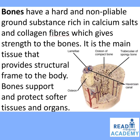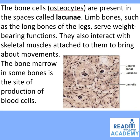Bones have a hard and non-pliable ground substance rich in calcium salts and collagen fibers, which gives strength to the bones. It is the main tissue providing structural framework of the body. Bones support and protect softer tissues and organs. The bone has an outer compact bone and an inner trabeculae of spongy bone. A central Haversian canal surrounded by lamellae forms the osteon, with bone cells called osteocytes present in lacunae. The bone marrow in some bones is the site of production of blood cells.